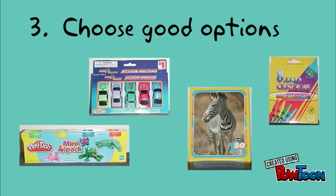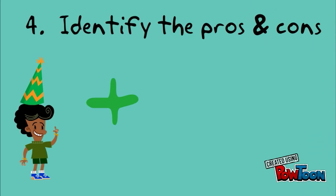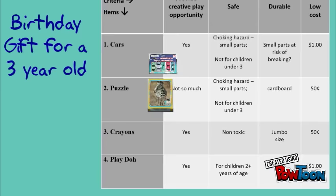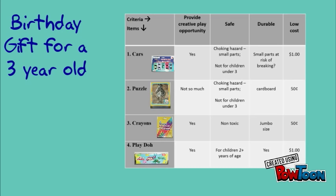The fourth step is identifying the pros and cons, done by determining how well each option meets your criteria. Using a decision-making grid can help with this process. The grid helps us identify, organize, and compare criteria information for each item.